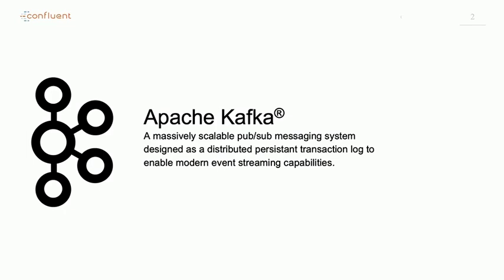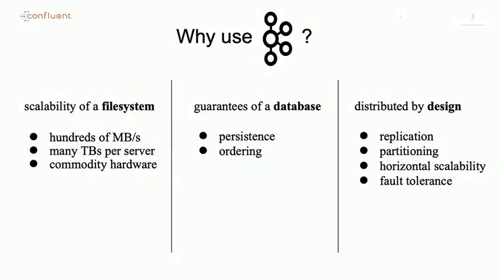Kafka was originally created at LinkedIn to solve the problem that they had NoSQL databases, a data lake, operational systems, and lots of different things going on, and they weren't able to get the data into all of those in real time at the same time. It has the scalability of a file system — hundreds of megabytes per second, I've seen gigabytes per second. It's persistent and runs on commodity hardware. Kafka is not a database — I'm going to say that a bunch of times — because that is a common mistake. You can't query Kafka; you basically read a stream of events out of it. But it does give persistence and ordering within a given partition.